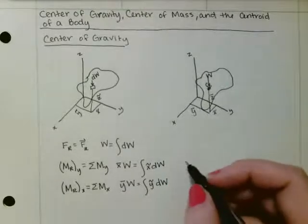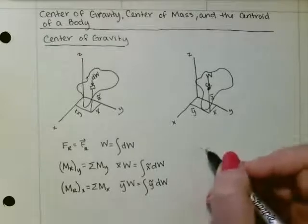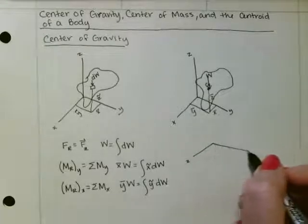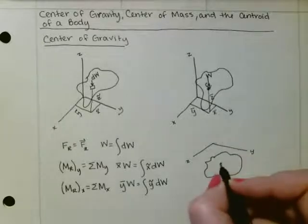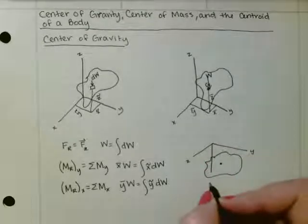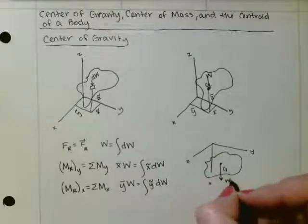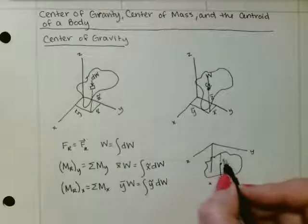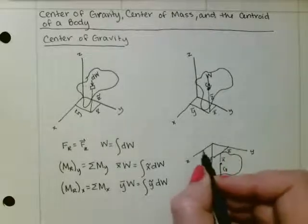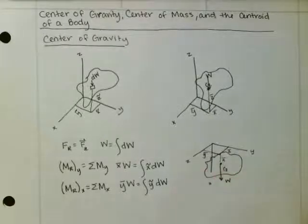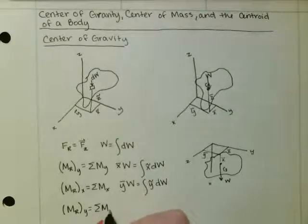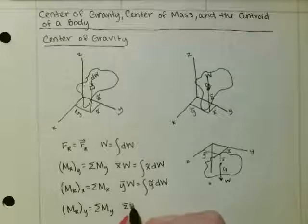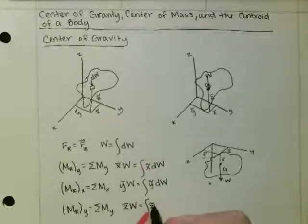To find our z̄, we need to rotate this, such that we'd have z, y, and our element g, with our weight acting down, and we would have x̄, z̄, and ȳ. Such that if we were to sum the moments to get the resultant moment about the y axis, we'd get z̄w is equal to the integral of z̃ dw.